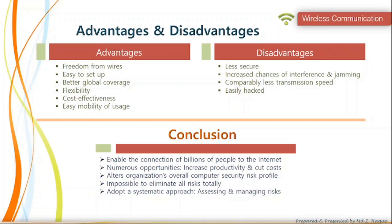Despite the advantages of wireless communication, there are some disadvantages. It is less secure and unreliable as communication is done through open space. There are high chances of interference and jamming due to external factors like dust storms, fog, and bad weather. Transmission speed is comparatively less, and wireless networks are easy to hack.